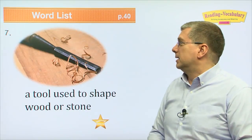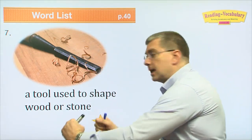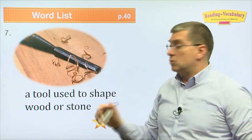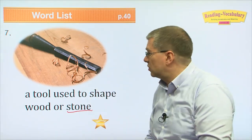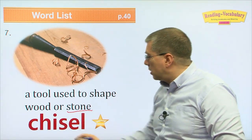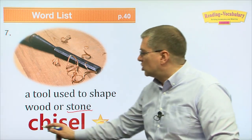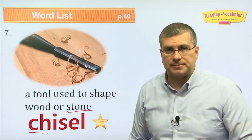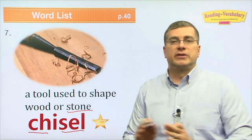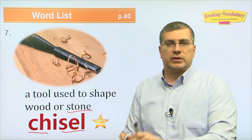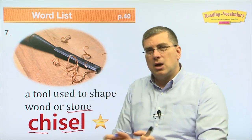Number seven: this is another interesting tool. You use it with a hammer and move it along wood or stone to make the wood or stone into a certain shape. What do we call this tool? We call it a chisel. It has two sounds: ch and sel — chisel. It's used to shape wood or stone into different shapes.